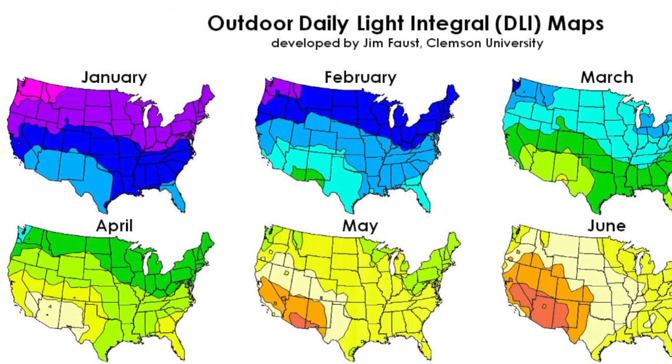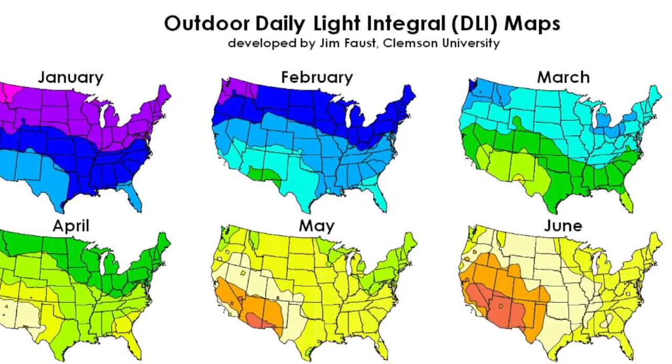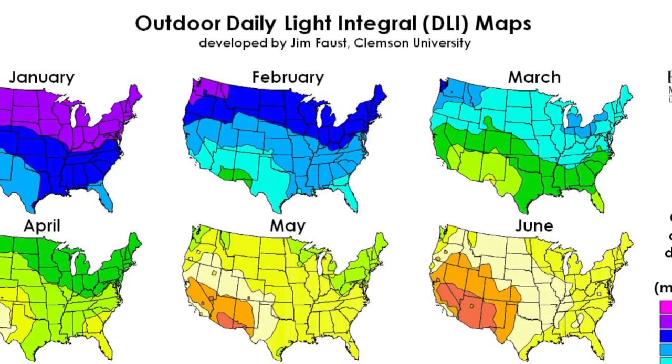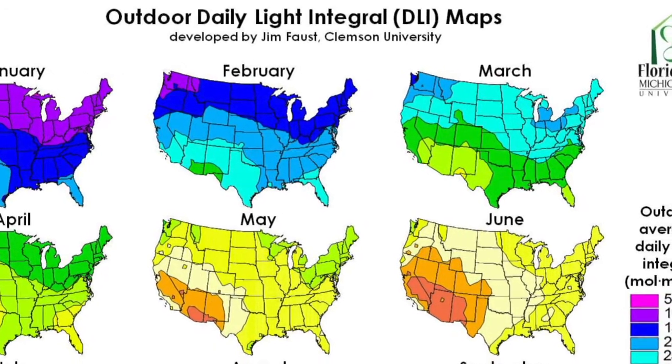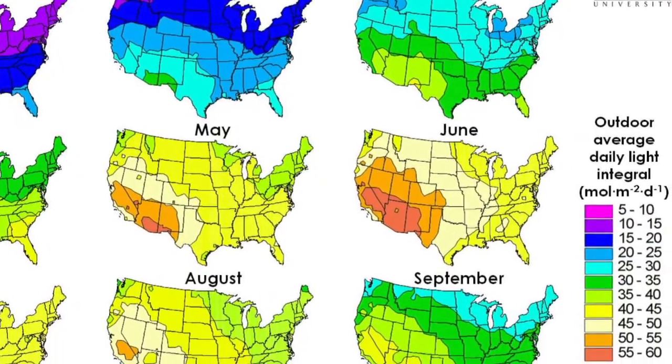At this time of the year, the outdoor DLI can range from 5 to 30 moles of light per square meter per day. The light values can be even lower inside the greenhouse, from 1 to 5 moles.